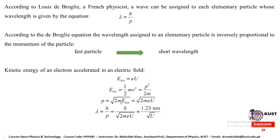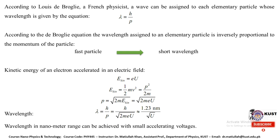Substituting into the de Broglie equation: λ = h/p = h/√(2meU) ≈ 1.23 nm/√U, where U is the external potential difference applied. The wavelength is thus in the nanometer range. We can write λ ≈ 1/3 nm / √U. From this, the resolution formula D = 0.6λ / (n·sin α) gives approximately D ≈ 0.74 / (α·√U) nm.